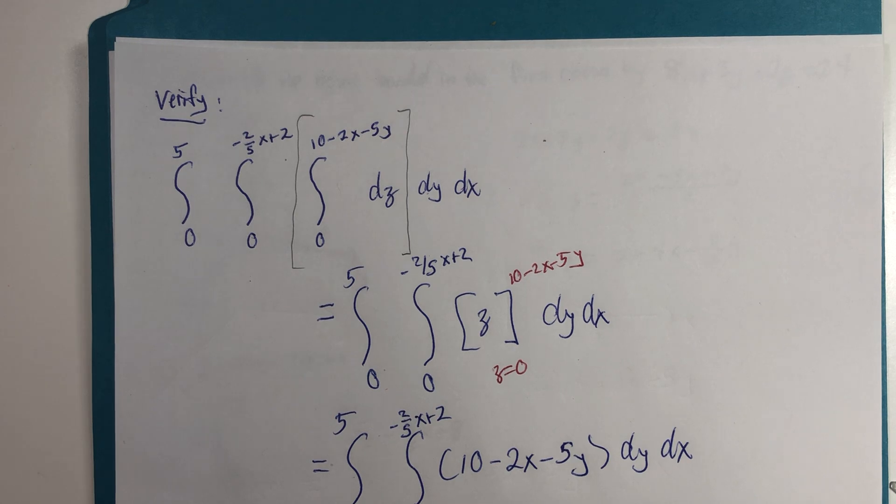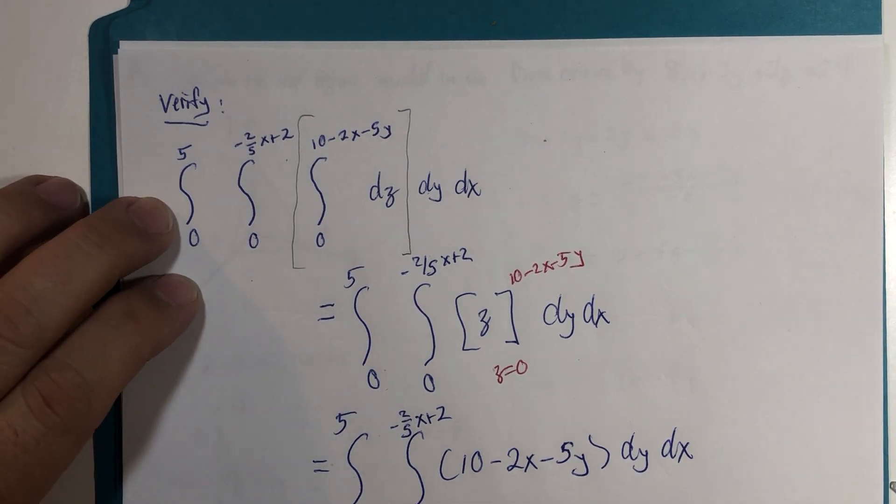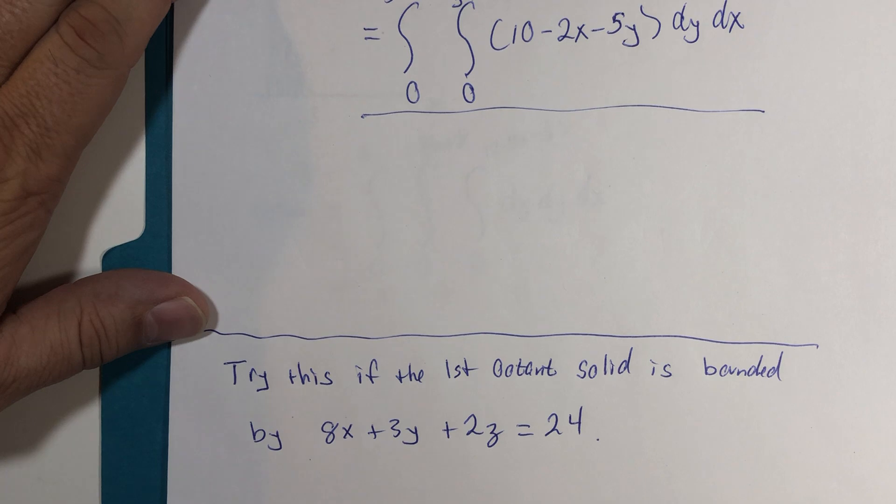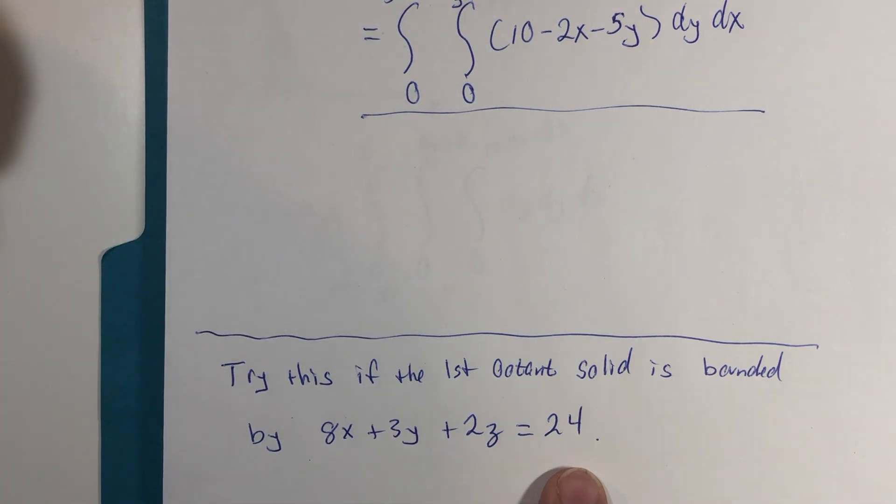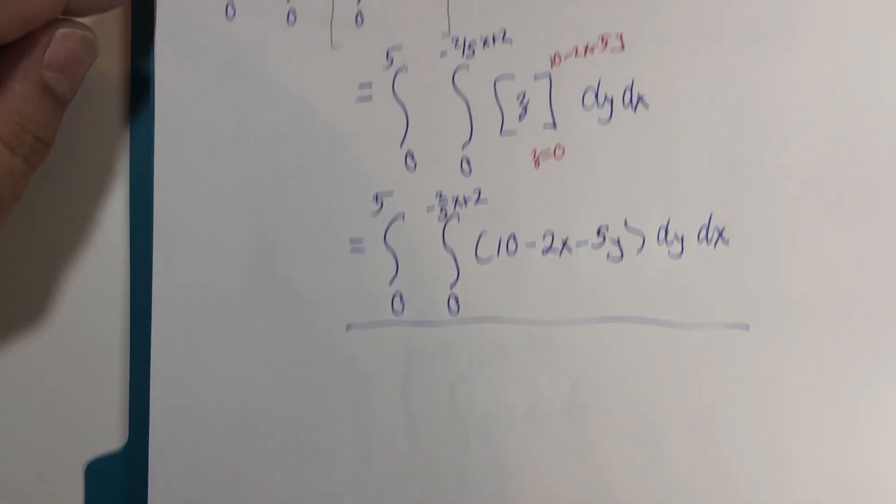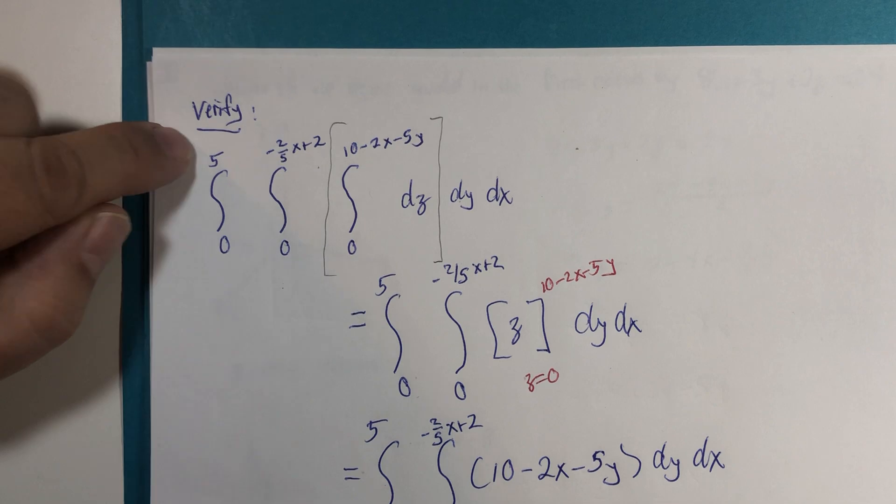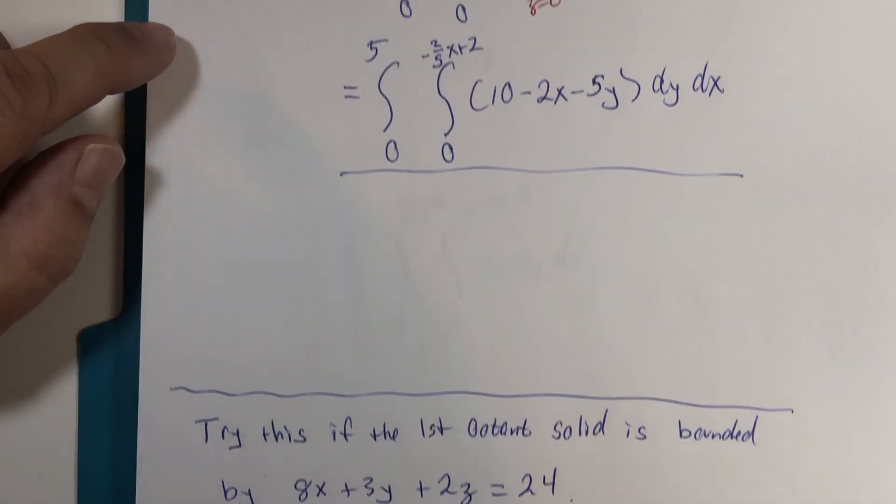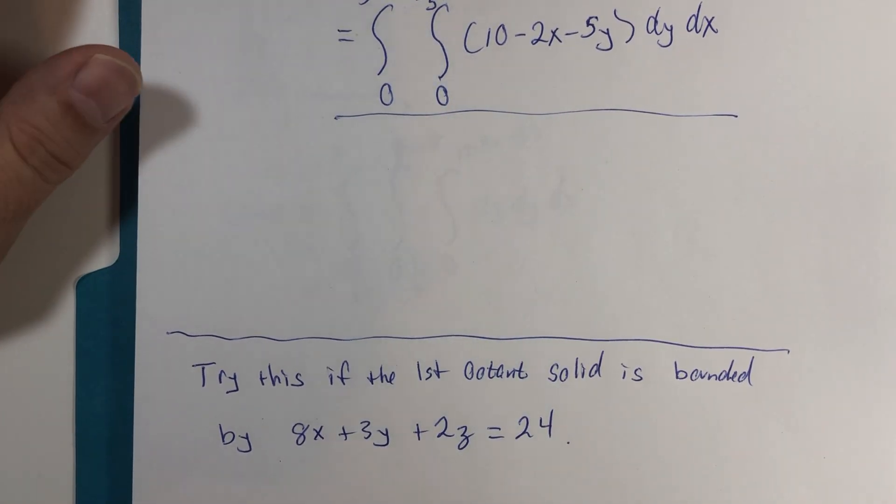Now, what I'd like you to do is to consider another problem, another example. First octant bounded by this plane, 8x plus 3y plus 2z is 24. I want you to pause the video, try to set up the triple integration for the volume of that solid object. All right. Let's go back to here again. So I'm going to suggest that you hit pause.